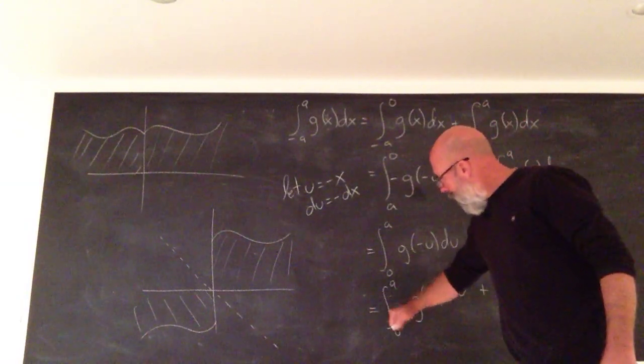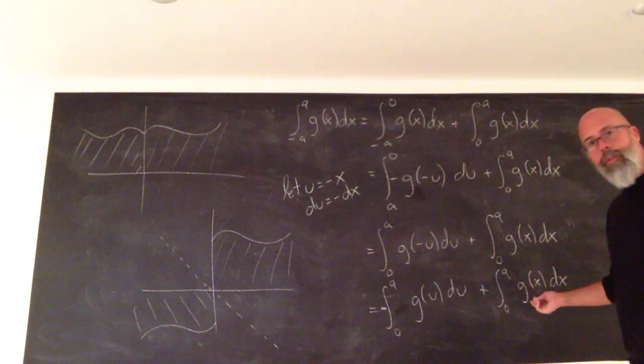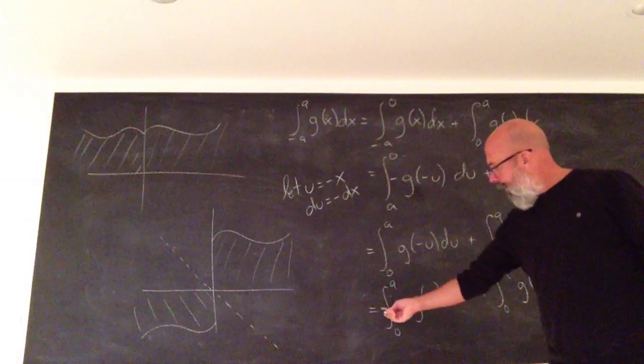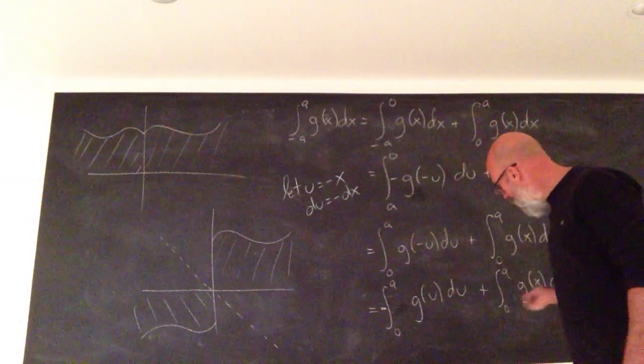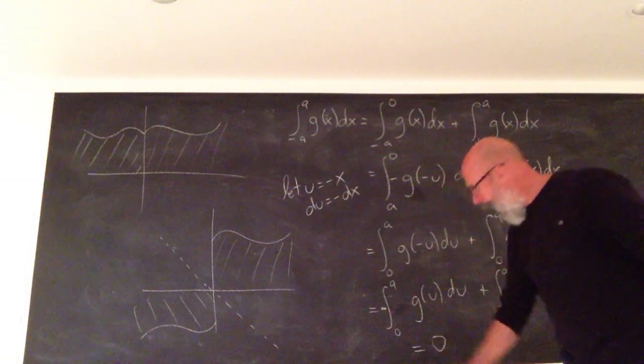Now you can bring this negative outside, and you have the integral from 0 to A of G minus the integral from 0 to A of G. These two things are equal. One is positive, the other one is negative. They add to 0.